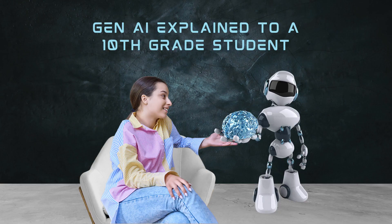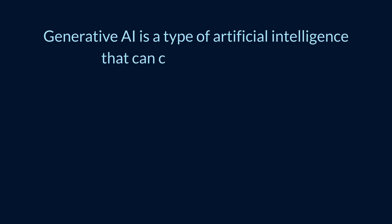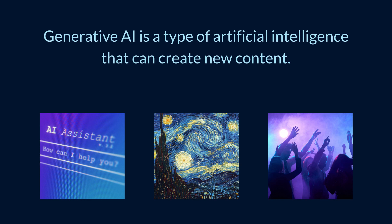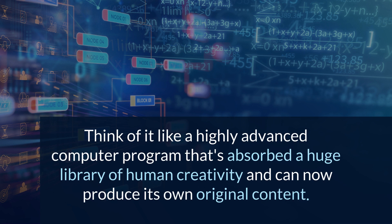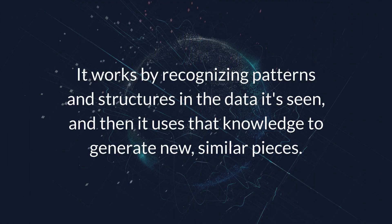We asked ChatGPT to explain Gen AI for a 10th grade student, and here's ChatGPT's answer. Generative AI is a type of artificial intelligence that can create new content, whether it's writing, images, or music, based on the vast amounts of data it's trained on. Think of it like a highly advanced computer program that's absorbed a huge library of human creativity and can now produce its own original content. It works by recognizing patterns and structures in the data it's seen, and then it uses that knowledge to generate new similar pieces.